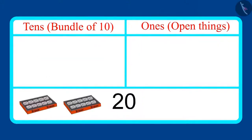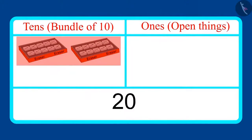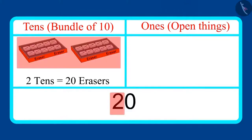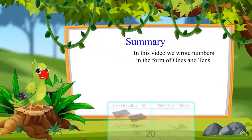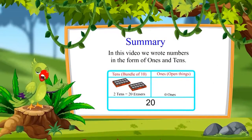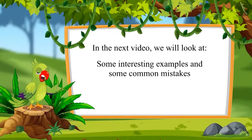Now, in the end, let's look at the number of erasers, which is 20. Can you tell me how many ones and tens are there in this? This is a bundle of 10, and there are 10 more erasers left. That means there is another bundle of 10. We have 2 bundles of 10. Therefore, 20 has 2 tens and 0 ones. Have you understood? That was all for today. In this video, we wrote numbers in the form of 1s and 10s. In the next video, we will look at some more interesting examples and will learn about some common mistakes which should not be done. Till then, bye friends.